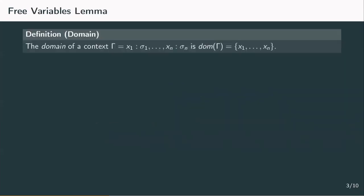We start with a lemma about free variables in a typable term whose consequences we already witnessed. For that, we need the notion of the domain of a context, which is just the set of all variables contained in it.